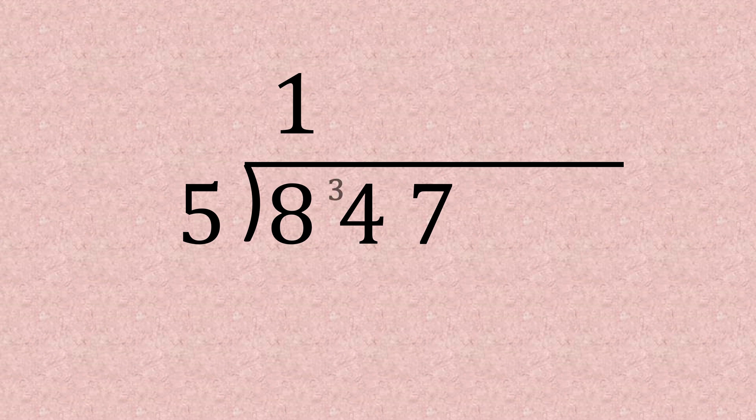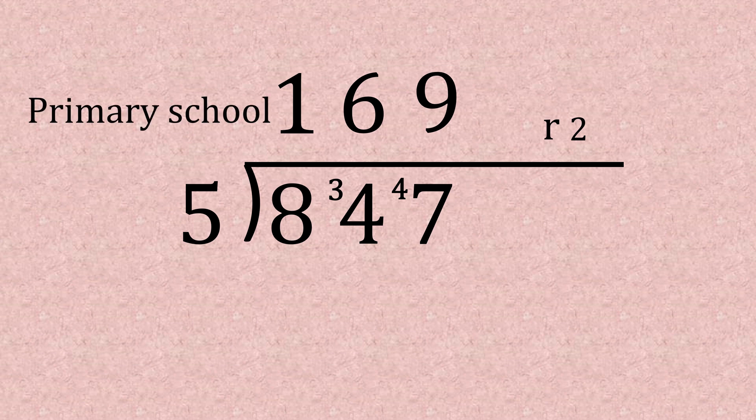Now let's have a look at 847. Pop on the bus stop, we're going to divide it by five. Fives into eight go one time with three left over, so we've got 34. Fives into 34 goes six times with four left over, giving us 47. 47 divided by five goes nine times with two left over.